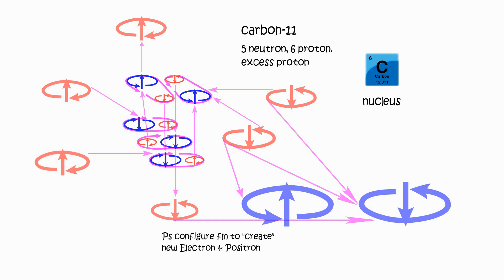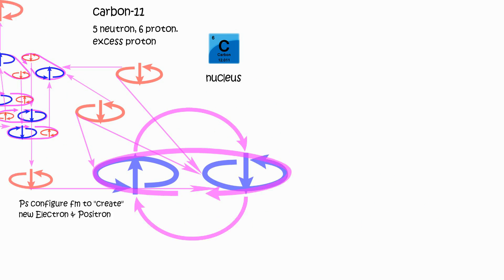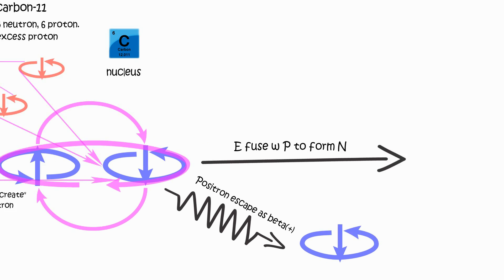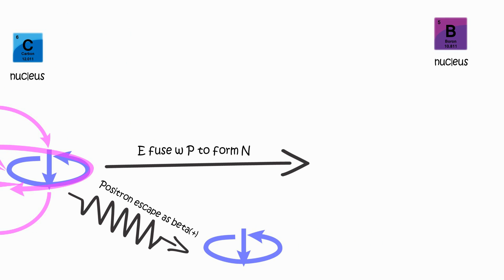Absorbing excess momentum from the nucleus, proton generates an electron-anti-electron pair. The anti-electron is emitted as beta-plus decay, and proton fuses with the electron to become neutron, and joins the nucleus, which becomes a nucleus of boron-11 atom.